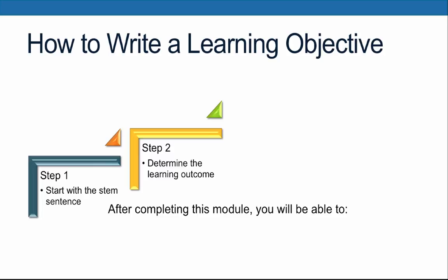Next, determine the learning outcome. Think about what it is that you want the students to be able to do, and then think about how you will know that they understand what you've taught them. What is the outcome or product that they will do or produce that demonstrates that they've mastered the concept?